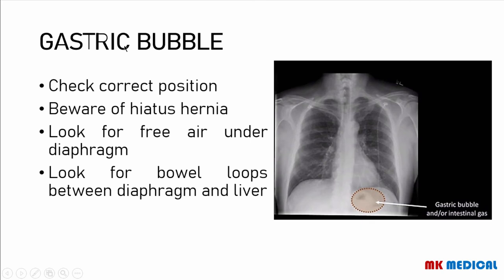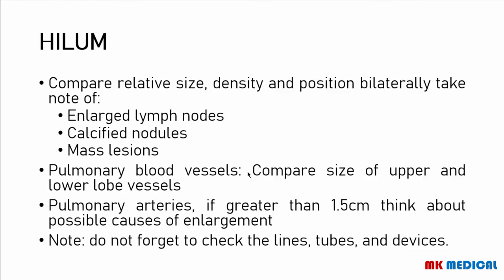Moving on to the gastric bubble — remember that the gastric bubble is usually going to be found on the left side below the diaphragm. You should be aware of hiatyhernia, which I showed in the first two review lecture videos — go back and watch those if you missed that. You may sometimes look for any free air under the diaphragm, but be aware of a sign known as the Chilaiditi sign — this is simply a bout of bowel loop between the diaphragm and the liver, which you can mistake for a pneumoperitoneum.